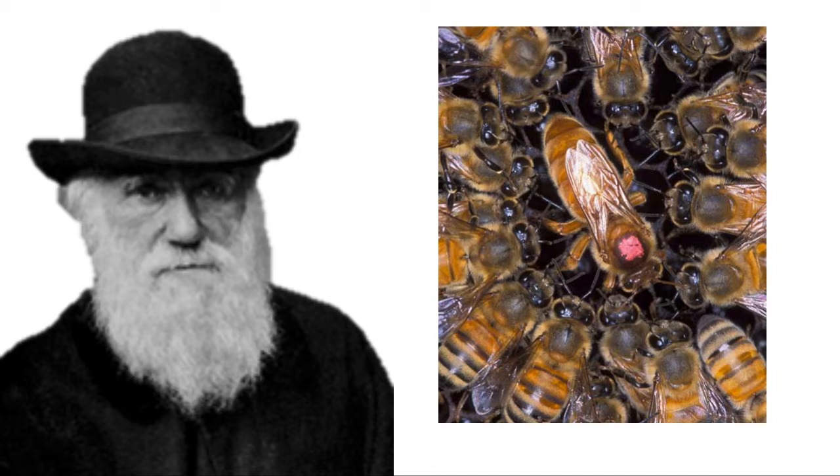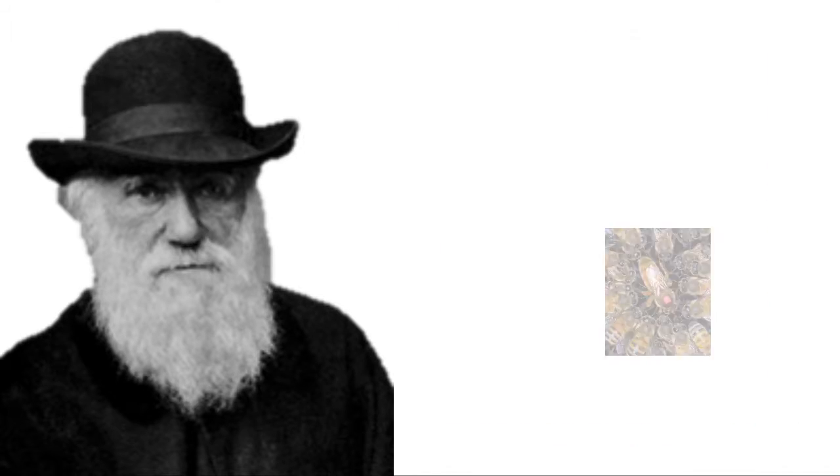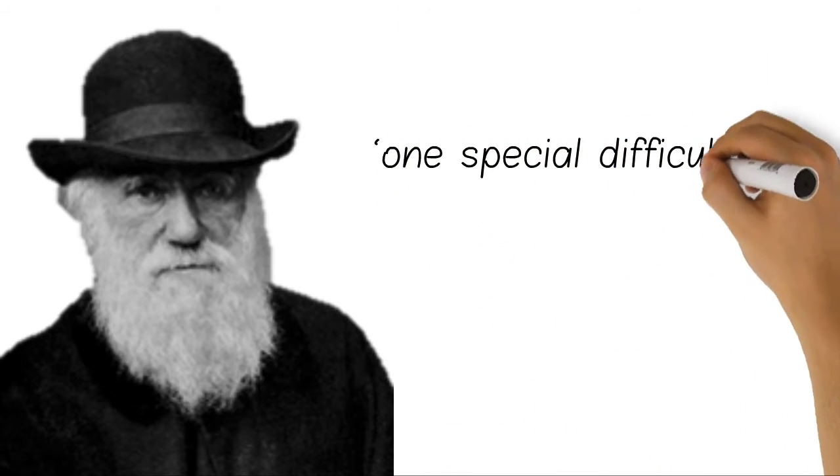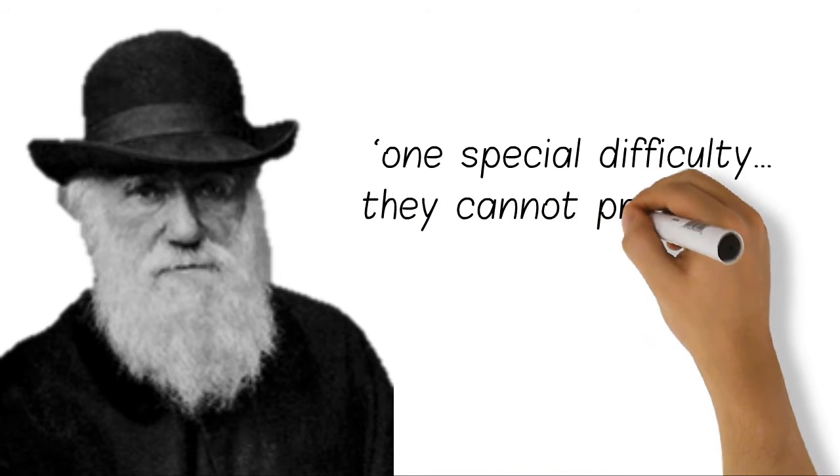This certainly throws off Darwin's natural selection theory, as these organisms are not reproducing. Indeed, Darwin stated that eusocial insects were his one special difficulty, particularly because they cannot propagate their own kind.